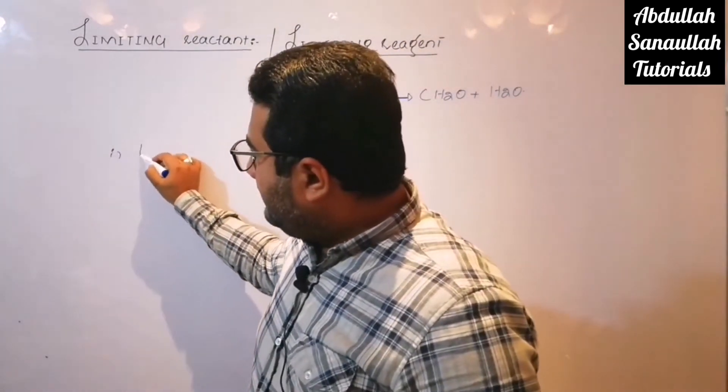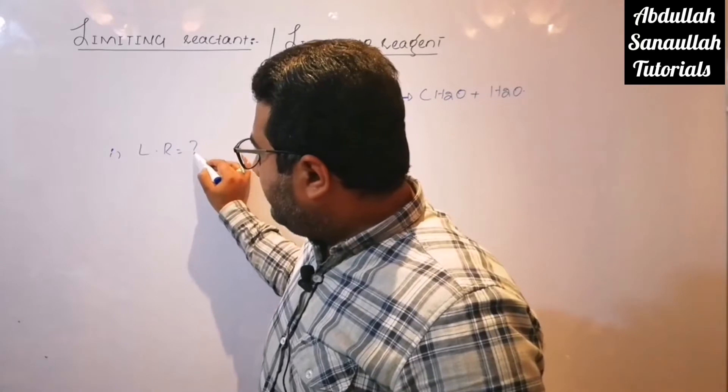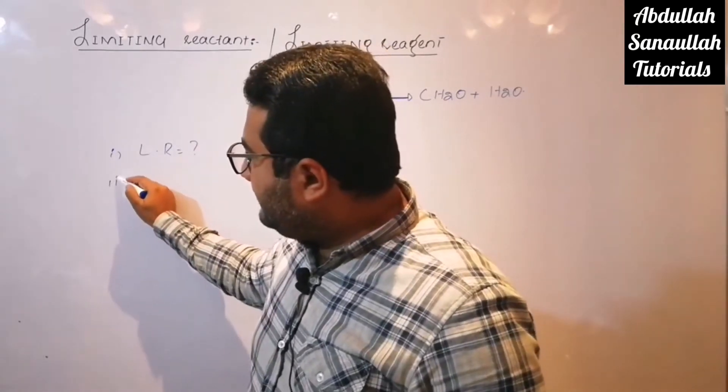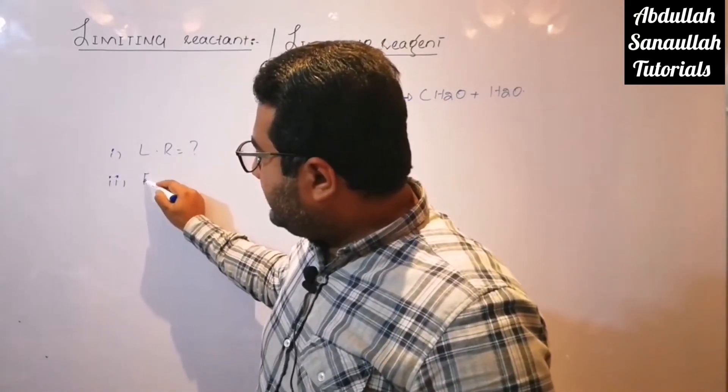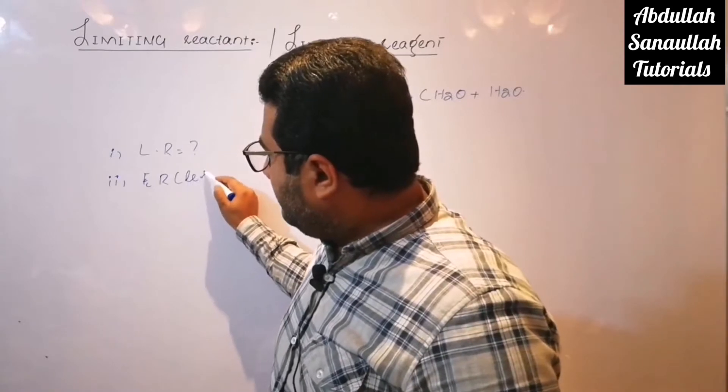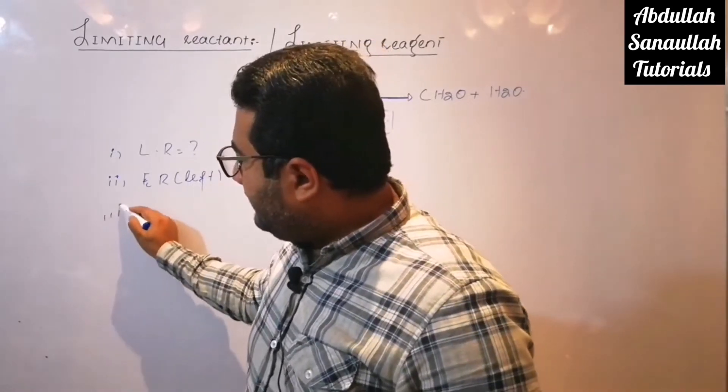Number one, limiting reactant - identify the limiting reactant. Second, excess reactant left. And third, mass of CH2O formed.